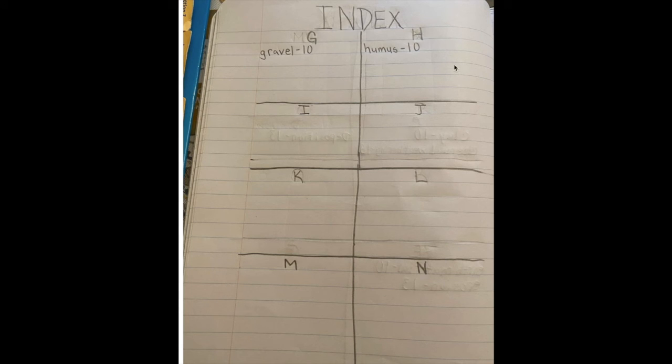We also have a page for letters G through N that is on page 197. Make sure you have these two vocabulary words added to your index.